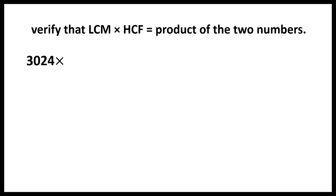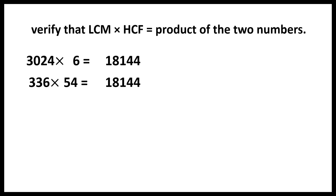Here LCM is 3024 and HCF is 6. If we multiply these two, we get 18,144. The numbers are 336 and 54; if we multiply these two we also get 18,144. So this is equal to this — we have verified that LCM into HCF is equal to the product of the two numbers.